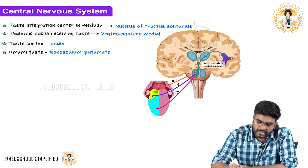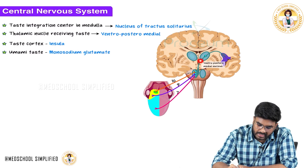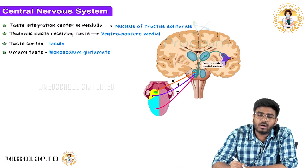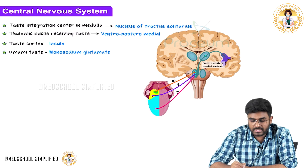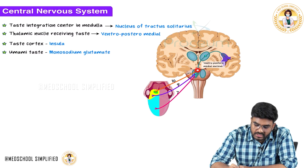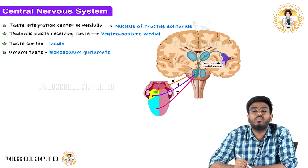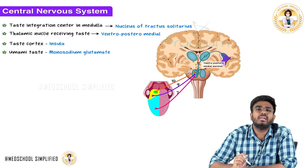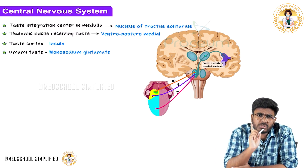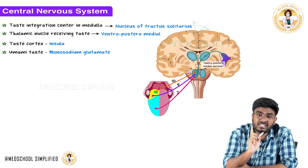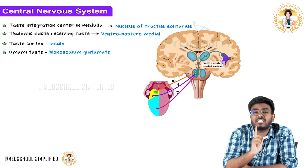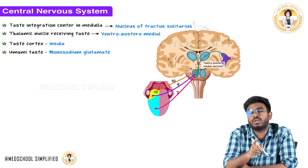From the nucleus of tractus solitarius, the neurons are projected to the thalamus. Most general sensations like touch, pain, temperature also come to the thalamus, but those go to the ventroposterolateral nucleus of the thalamus.